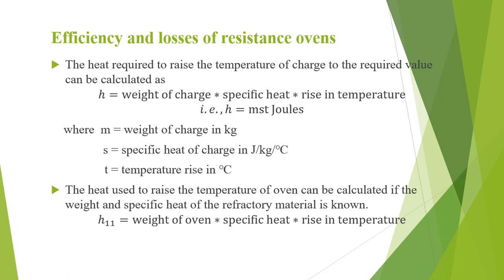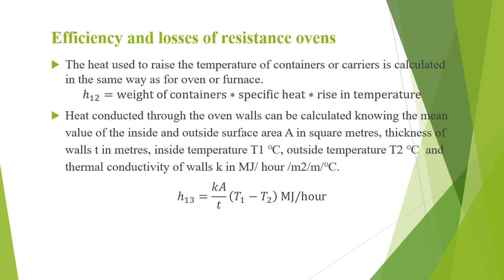If the oven is used continuously, this loss is negligible. The heat used to raise the temperature of containers or carriers, denoted H12, is calculated the same way: H12 = weight of containers × specific heat × rise in temperature. The container has to be heated every time the furnace is charged. Heat conducted through the oven walls, denoted H13, is given by H13 = K × A / T × (T1 − T2), where A is the mean surface area in square meters, T is wall thickness in meters, T1 and T2 are inside and outside temperatures, and K is the thermal conductivity.